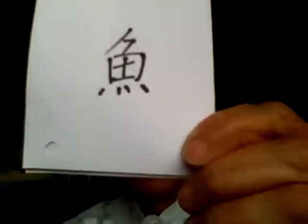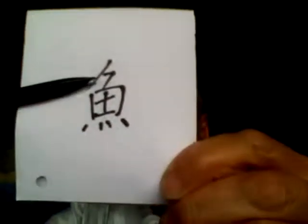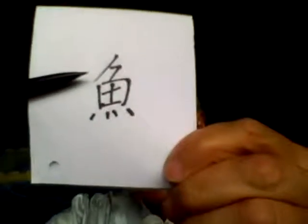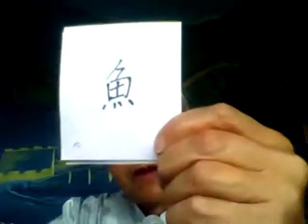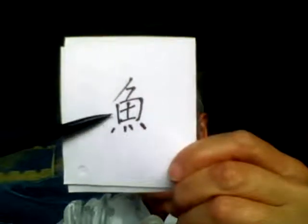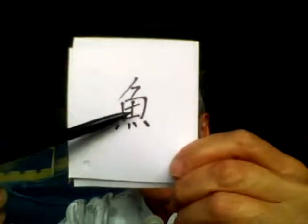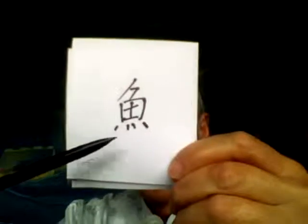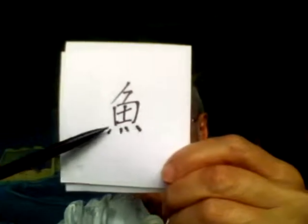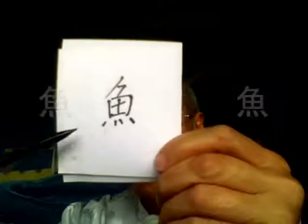It can be divided into three parts. The upper part is the head of a fish — it was deformed because of the writing method. The middle part is the body of a fish, with four scales. The lower part — four dots — is the four-piece tail of a golden fish.